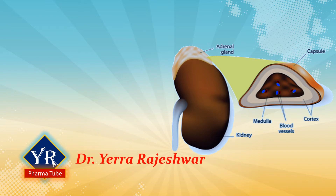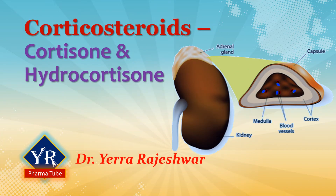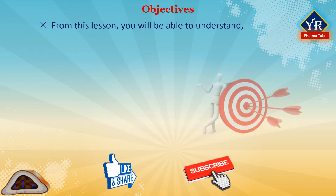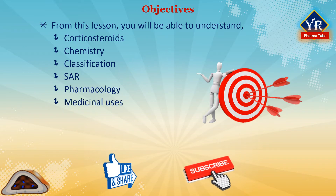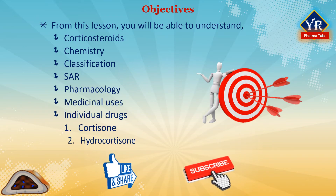If you did not watch them, the links are given in the description below this video. Watch them. In this video, I would like to discuss the corticosteroids such as cortisone and hydrocortisone. From this lesson, you will be able to understand the corticosteroids, their chemistry, classification, structure-activity relationship, pharmacology, and the individual drugs such as cortisone and hydrocortisone.